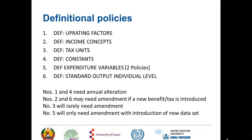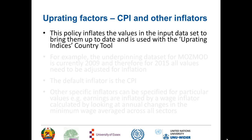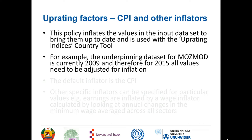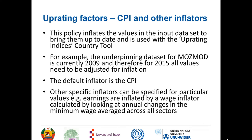Looking at uprating factors: this policy inflates values in the input data set to bring them up to date and is used with the uprating indices country tool. The underpinning data set for MozMod is currently 2009, so for 2015 all values need to be adjusted for inflation. The default inflator is the CPI, which is used for things that aren't specifically specified. But other inflators can be specified — for example, earnings are inflated by a wage inflator calculated by looking at annual changes in the minimum wage average across all sectors.